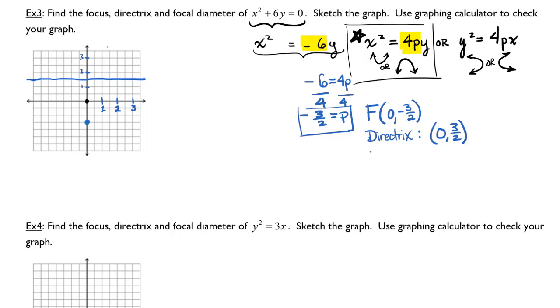Now I need to find my focal diameter, which is 4 times p. 4 times negative 3 halves is equal to... and it's in absolute values as well, which gives me 6.